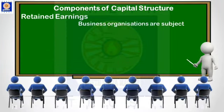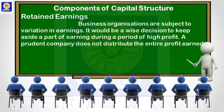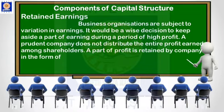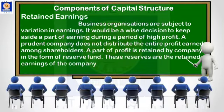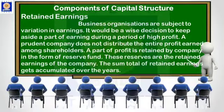Our third source of finance is retained earnings, which is nothing but reserves and surplus. Every year, a firm keeps aside a part of its profits for future uncertainties, as the future is unpredictable. This part of profit which is kept aside is called retained earnings. It is an internal and cost-free source of finance, as the company does not pay any dividend or interest to any other person — it is simply using its own old profits. It is also called the ploughing back of profit.